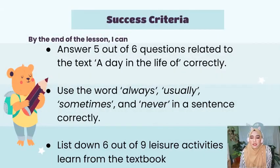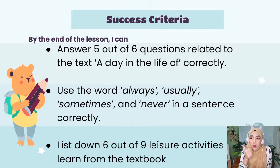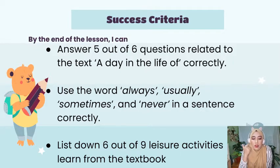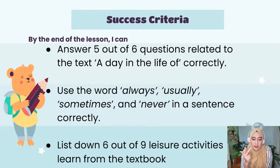Success criteria for today's lesson. By the end of the lesson, I can answer 5 out of 6 questions related to the text, A Day in the Life of, correctly. Use the word always, sometimes, and never in a sentence correctly. And list down 6 out of 9 leisure activities learned from the textbook.